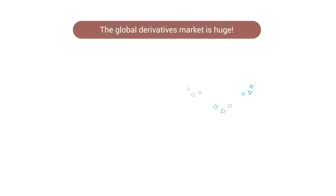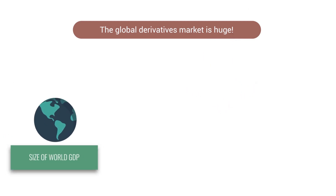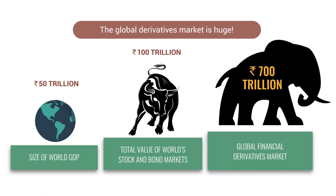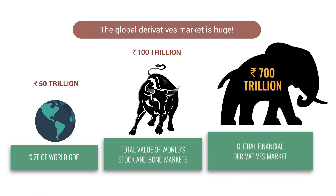Did you know the global derivatives market is one of the biggest markets in the world? The size of the world's GDP is 50 trillion dollars. The total value of the world's stock and bond markets is 100 trillion dollars. In contrast, the global derivatives market amounts to an astonishing 700 trillion dollars.